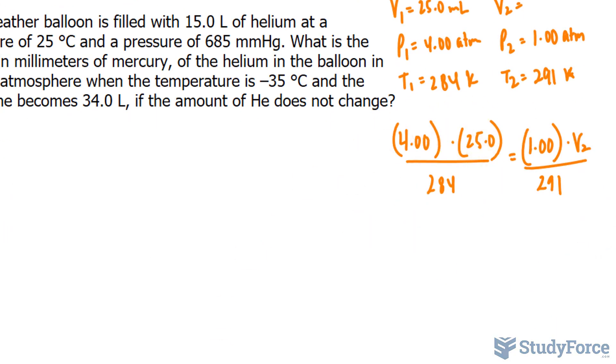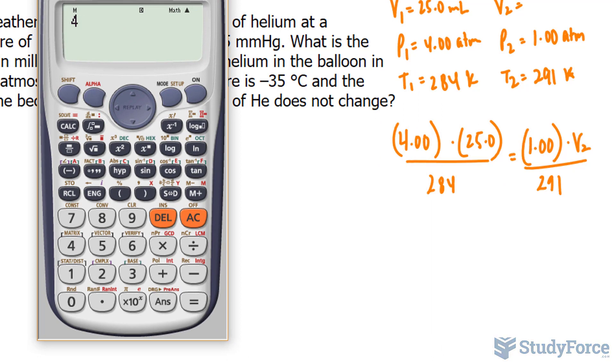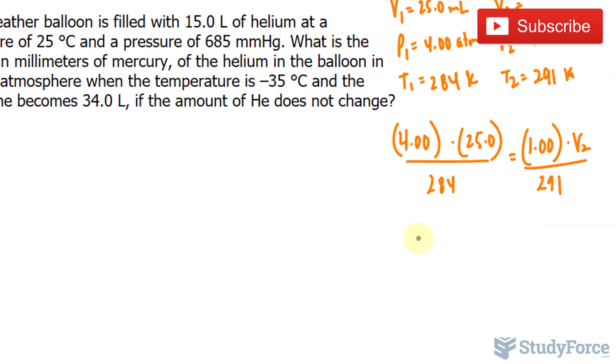I'm going to evaluate the left side. So I have 4.00 times 25, divide that by 284. And we get this number. Of course, we don't want to round right now, so just keep as many digits as you can. I'll write down a few digits after the decimal place. So 0.3521. That should be good enough.